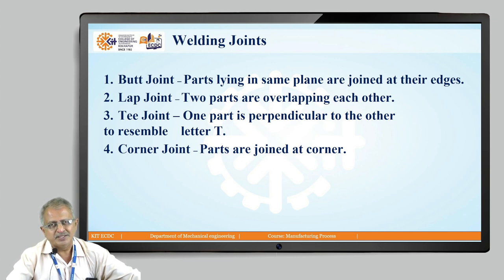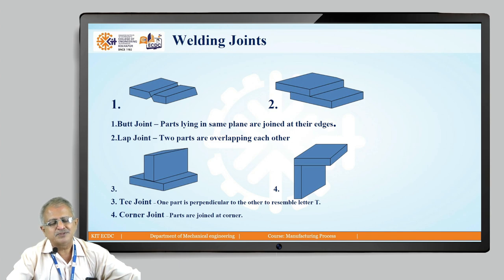Welding joints: welding is a joining of similar and dissimilar metals, and welding joints should be as strong as the base metal. There are five basic joints: butt joint — parts lying in the same plane are joined at their edges; lap joint — two parts are overlapping each other; T joint — one part is perpendicular to the other, resembling the letter T; corner joint — parts are joined at the corner.